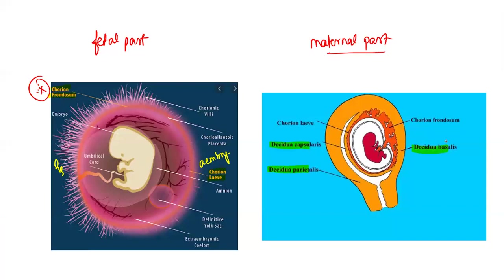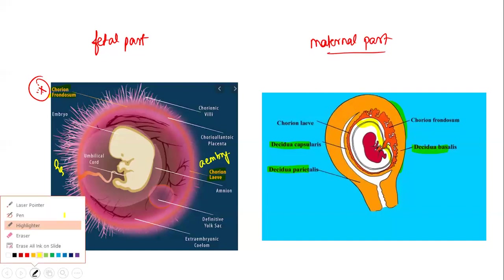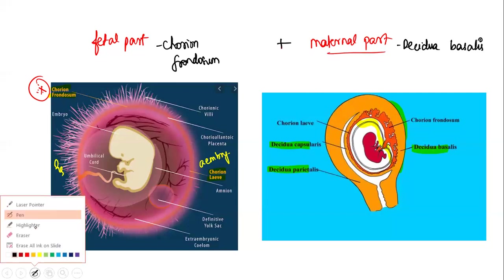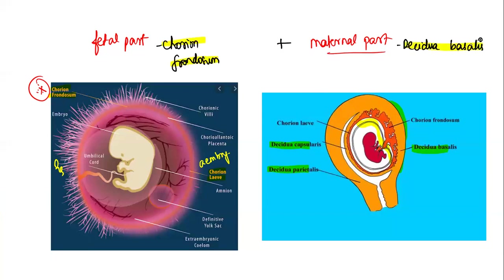For the maternal part, you need to know the decidua — the endometrium involved in pregnancy. There are three deciduas: decidua basalis, decidua capsularis, and decidua parietalis. The decidua basalis combines with the chorion frondosum to form the placenta. So the combination of chorion frondosum and decidua basalis forms the placenta.